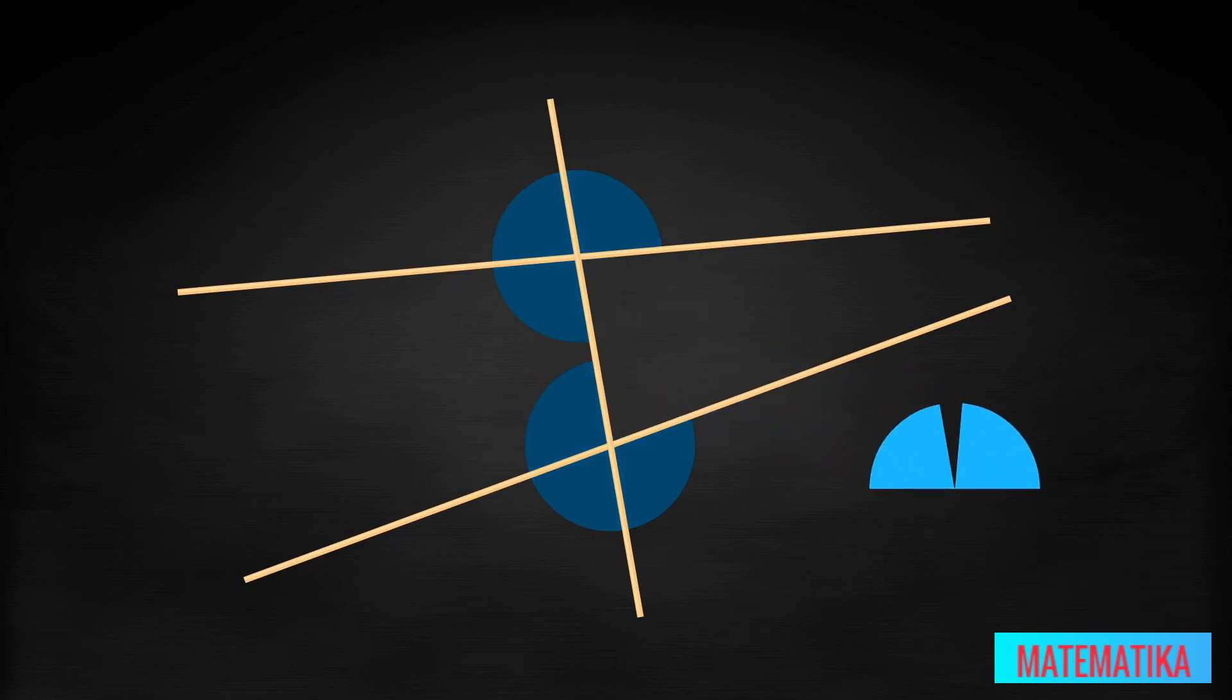The sum of both same side interior angles is less than 180 degrees. So Euclid is saying the lines represented by the first two spaghetti strands will, if extended, eventually meet. Let's draw the parallel postulate.